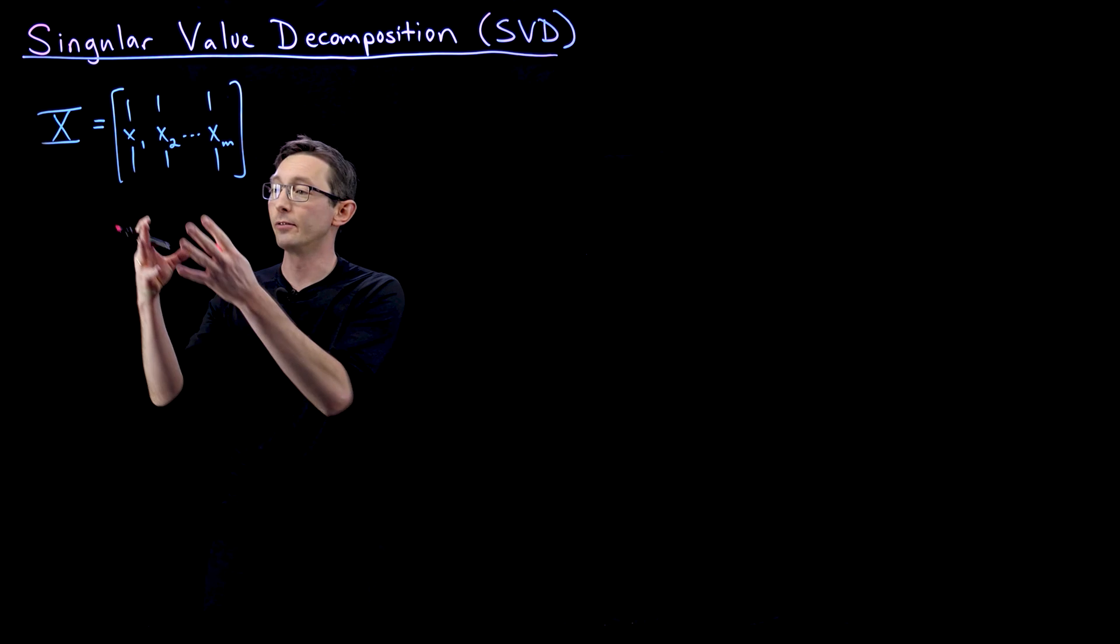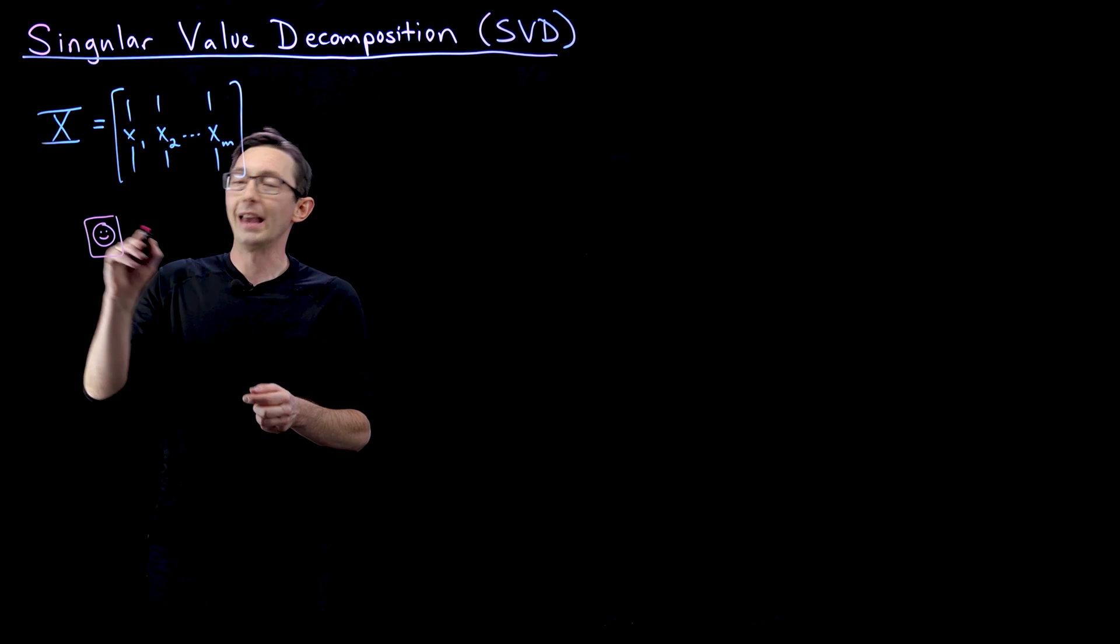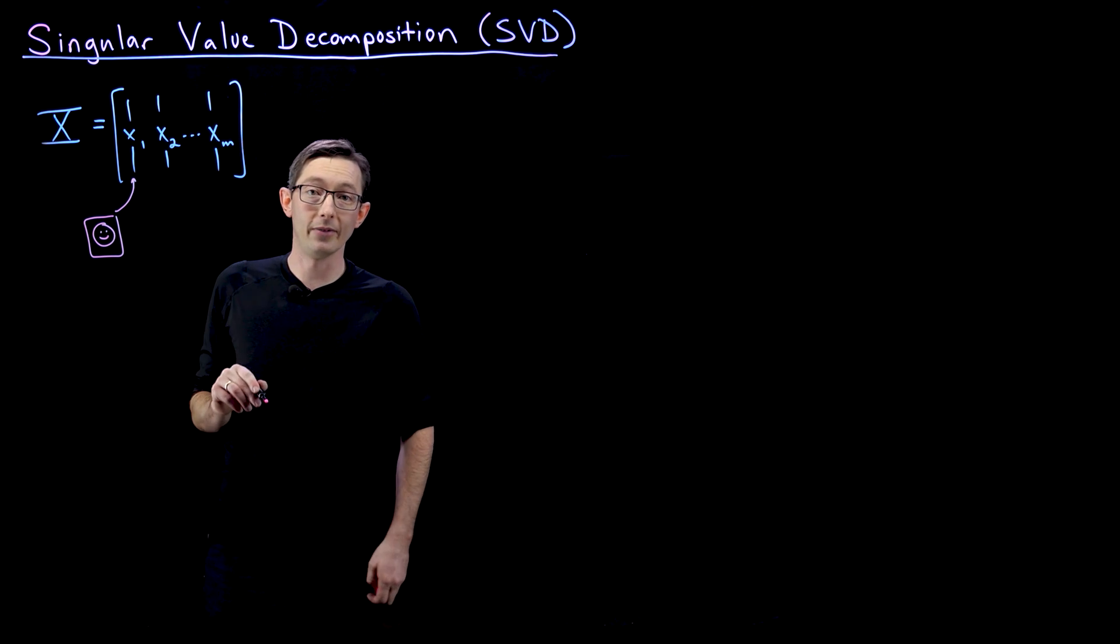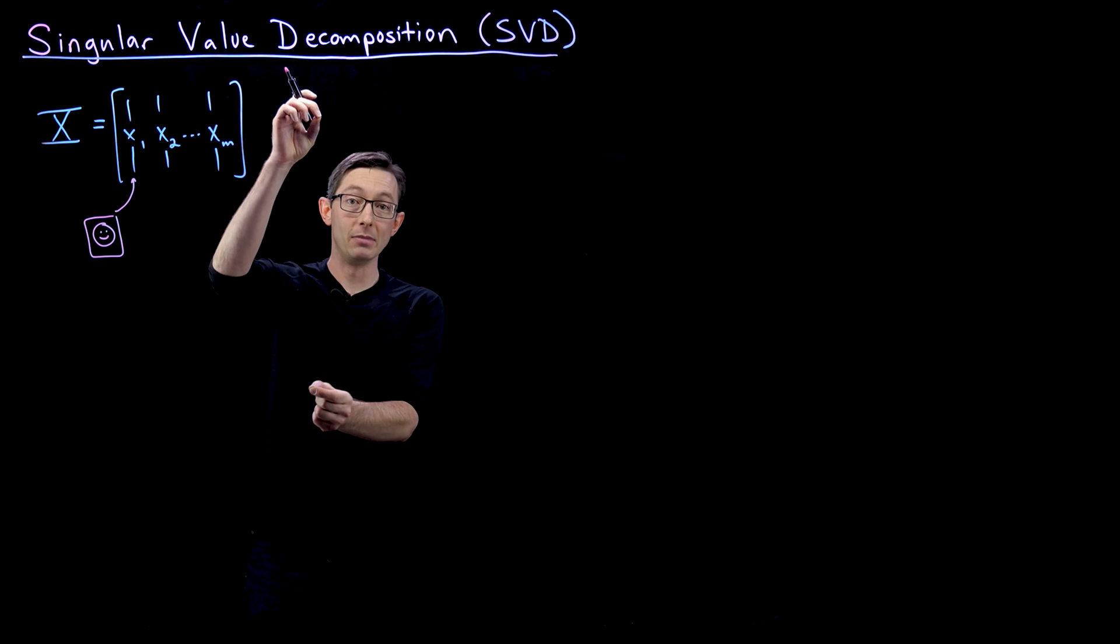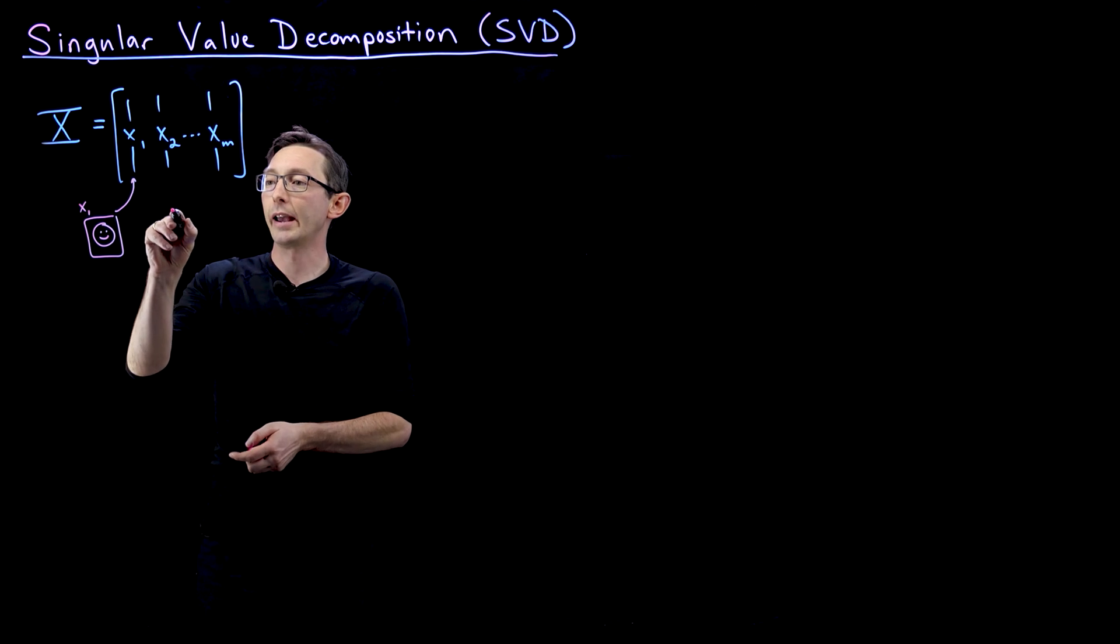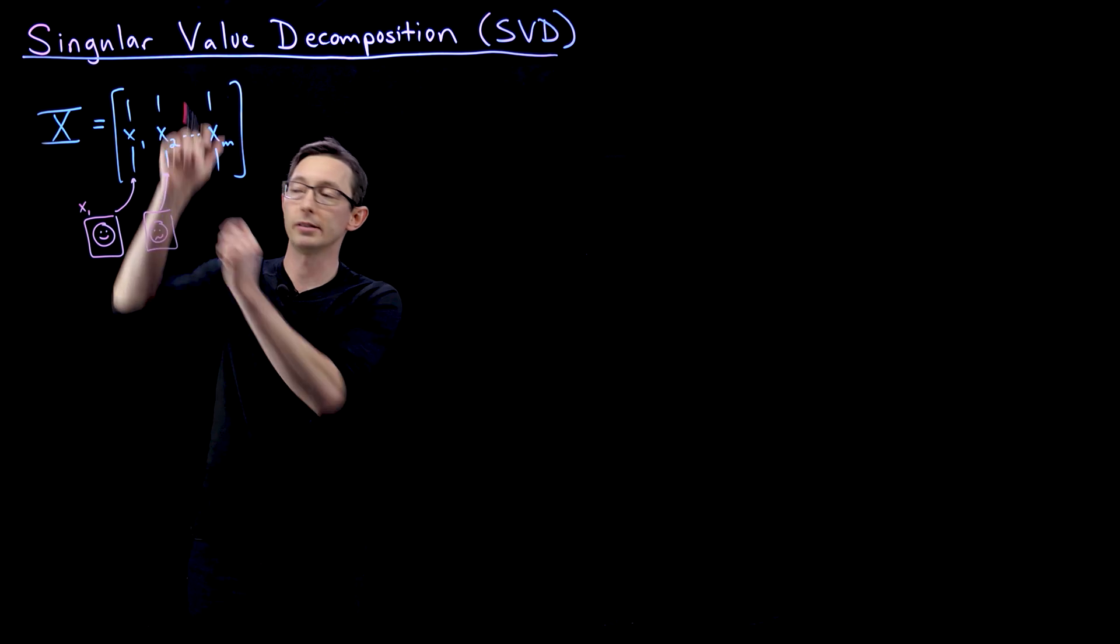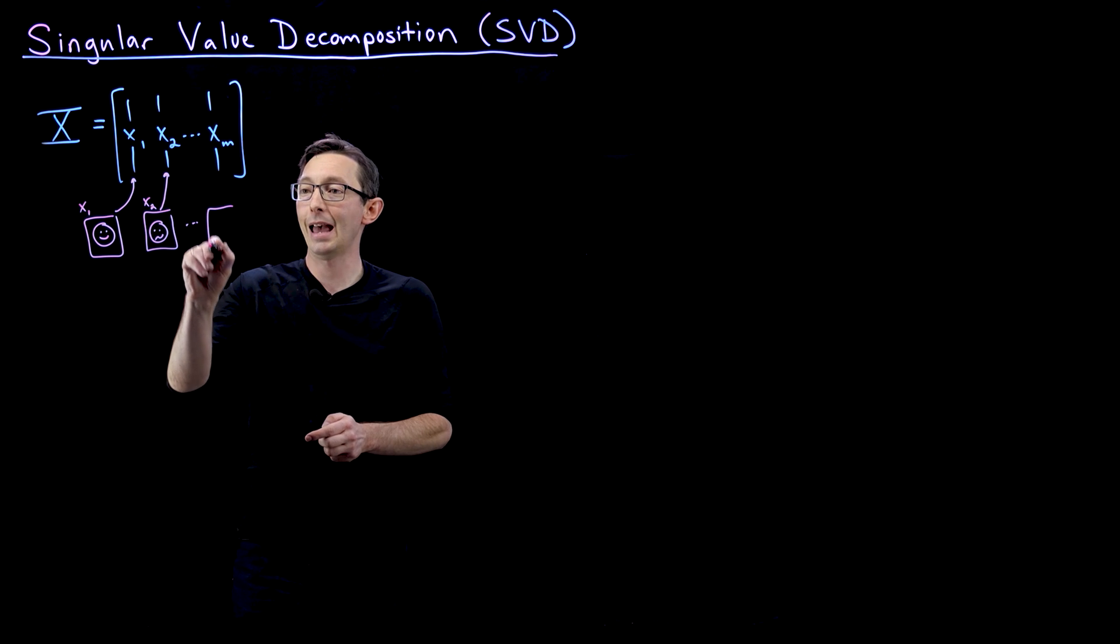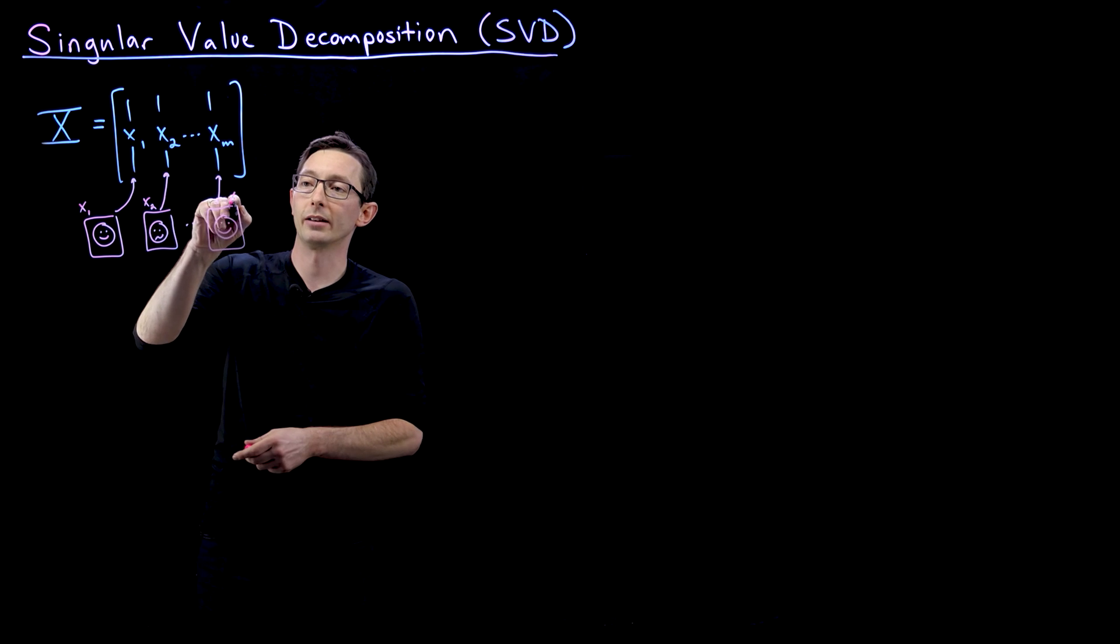For example, I could take a bunch of pictures of people's faces. So I could take person one and I could reshape that face into a tall, skinny column vector X1. So let's say this is a megapixel image. Then I would reshape that into a million by one column vector X1. So that's person one. I could do the same thing for person two and reshape them into a tall, skinny X vector, and so on and so forth up to Xm. So let's say I have m people, I can get these m column vectors.